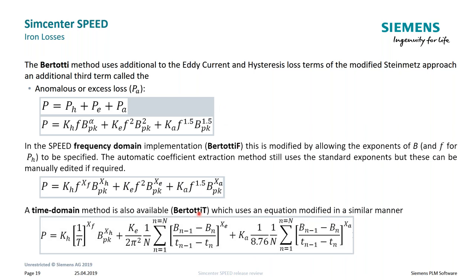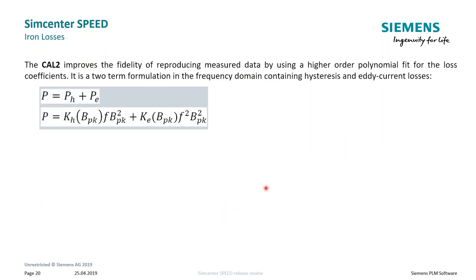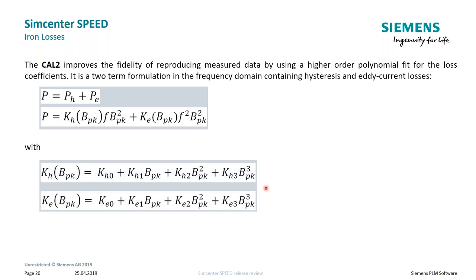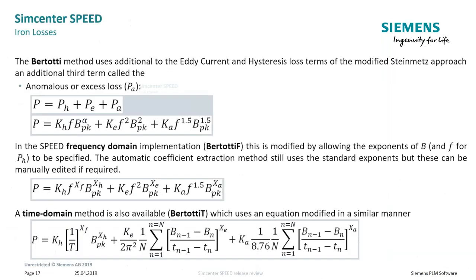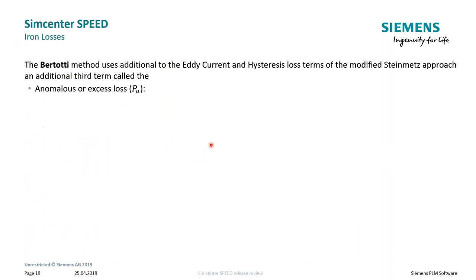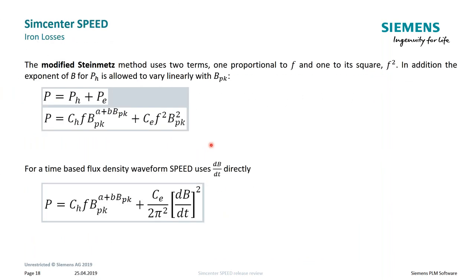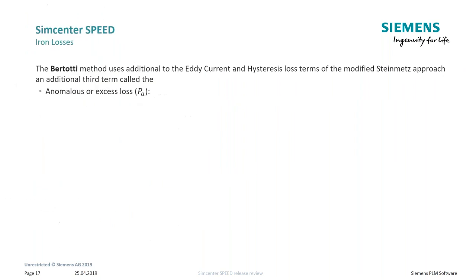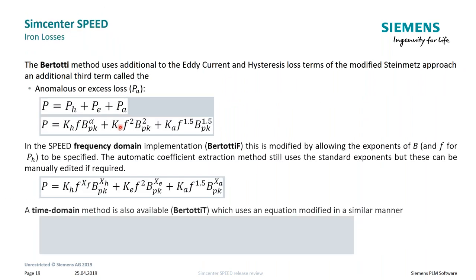The Cal2 method again uses only two terms — one for hysteresis and one for eddy current losses — but has eight parameters or coefficients to fulfill. In the Bertotti method there are seven coefficients to estimate, and in the modified Steinmetz only four coefficients to extract from the iron loss data that the vendor hopefully provides.